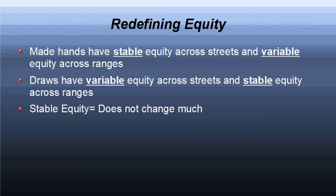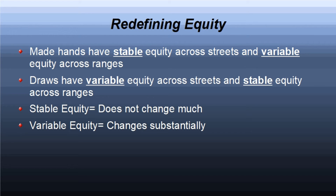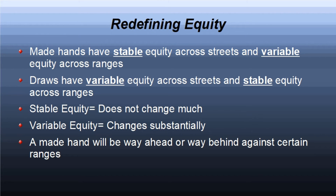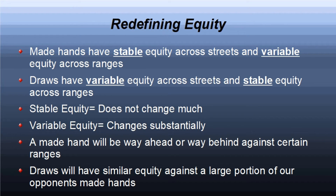On the other hand, imagine you have a draw against a weak made hand and miss your draw on the turn — your equity will now be a lot less than it was on the flop, meaning your equity is variable over progressing streets. Now think about how a made hand looks against a range that includes a few really strong hands: you're way ahead against a lot of hands in that range, but also way behind against some of them, giving you variable equity across the range. Conversely, if you have a draw, your equity is pretty much the same against nearly all of your opponent's made hands — stable equity across the range.